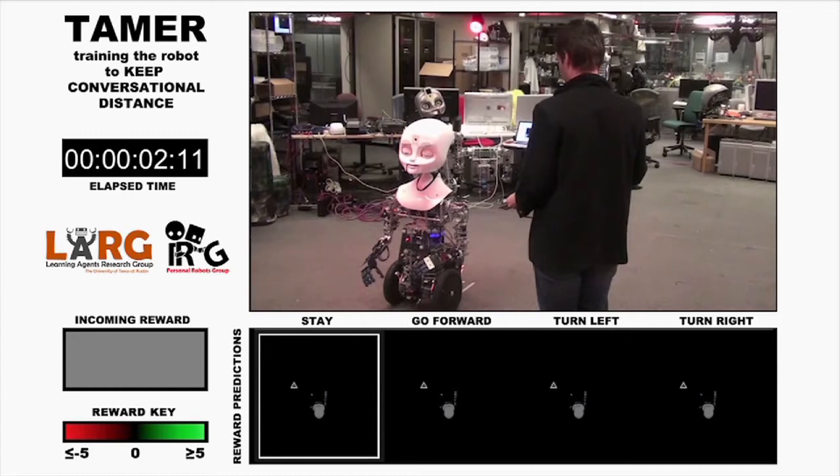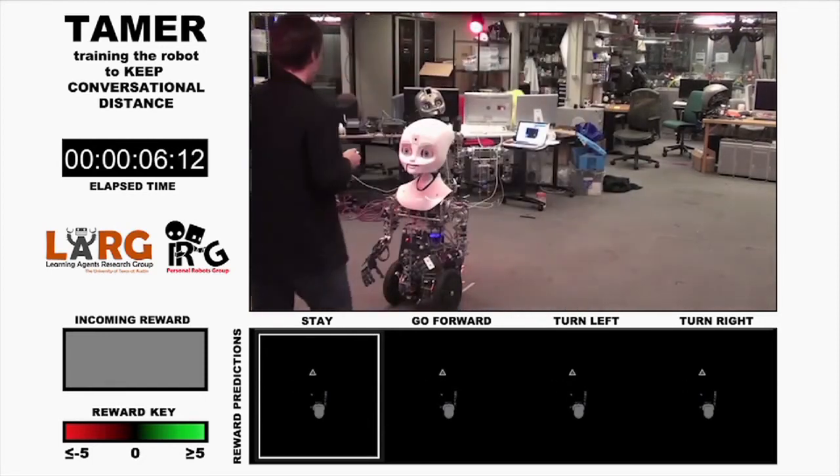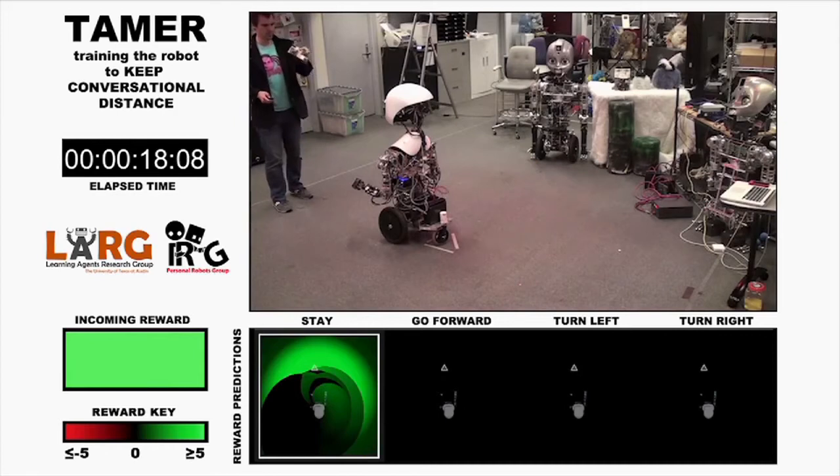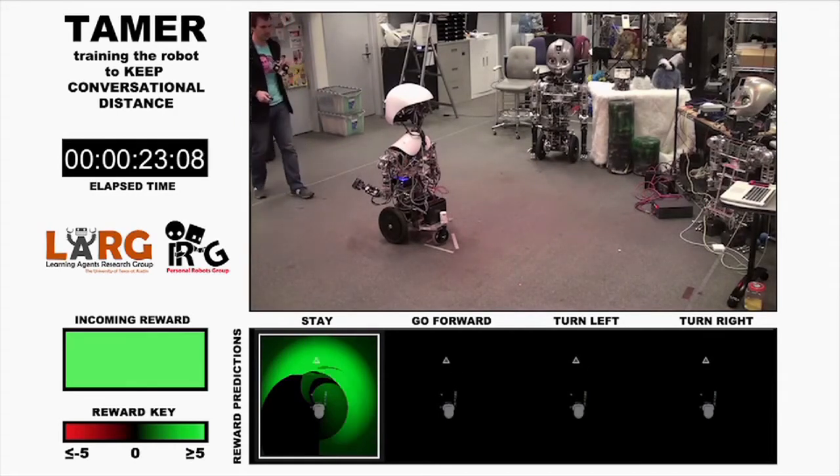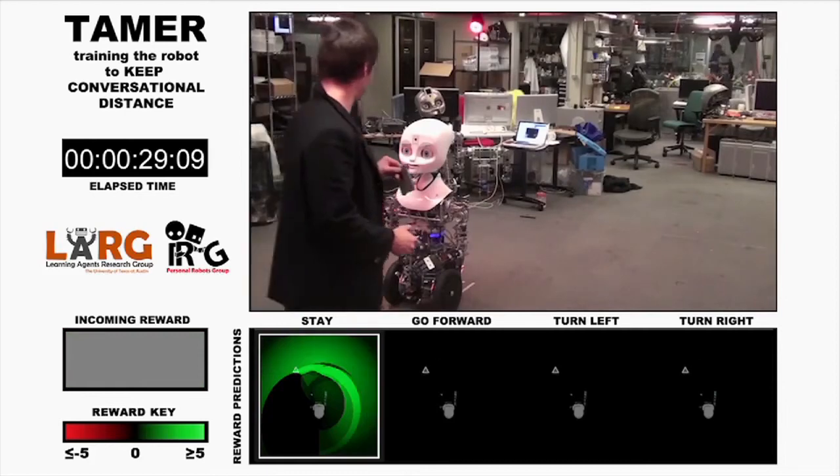Now let's see an actual training session. Here I'm training Nexi to follow the marker and then stop at a comfortable conversational distance. As the trainer, I first paint the stay action, giving positive reward at a wide range of marker positions that are roughly at conversational distance. Satisfied with my painting of stay, I then move the marker to a location at which Nexi should not stay and give negative reward.